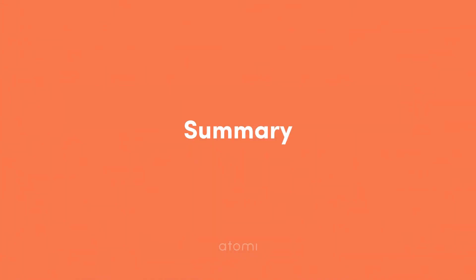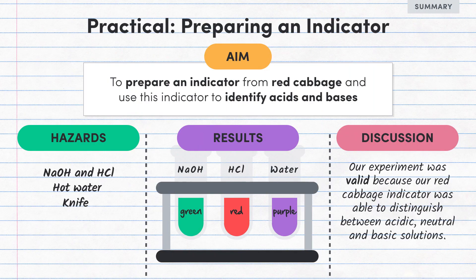But that's it for this one. We aimed to make a natural indicator using red cabbage and then test this natural indicator in acidic, neutral and basic solutions. The hazards we had to consider included using sodium hydroxide, hydrochloric acid, hot water and a knife. But all in all, it was a pretty valid experiment, was able to distinguish between acidic, neutral and basic solutions.